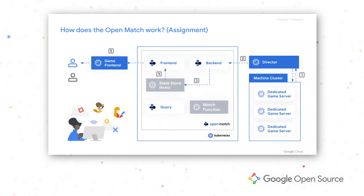In the assignment phase, once match proposals are gathered, we connect players to game servers. The director communicates with a game server orchestration platform such as Agones, which returns a game server. Once received, the director assigns the game server to the match proposal, where all tickets are populated, and forwards it back to the backend, eventually submitting updated ticket information to the state store. Each ticket in the match proposal receives this assignment, and once all tickets are populated, a response is returned to the client via the front end and your game front end.